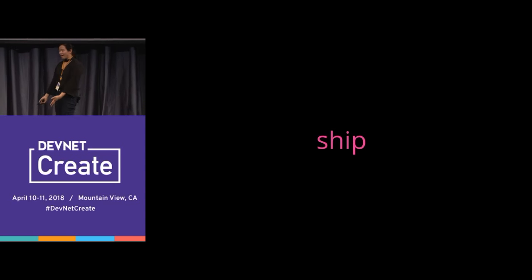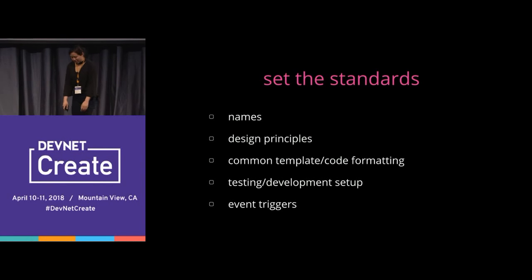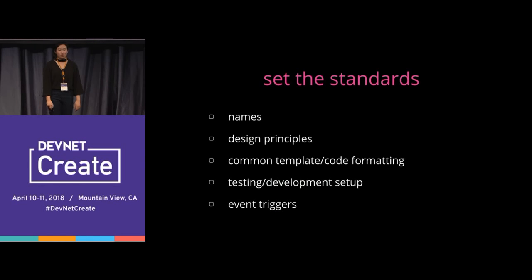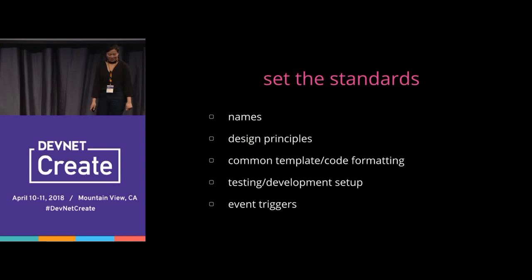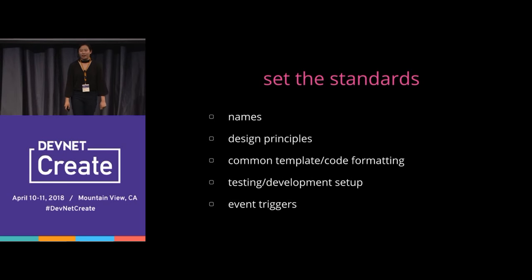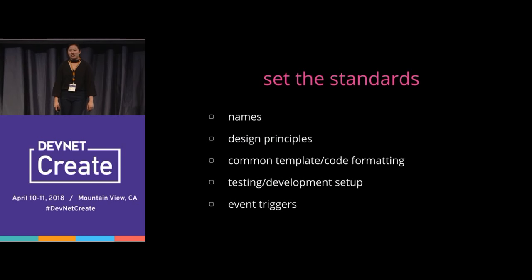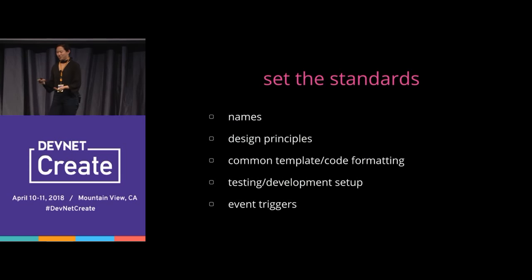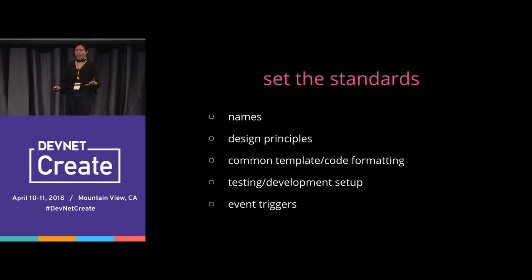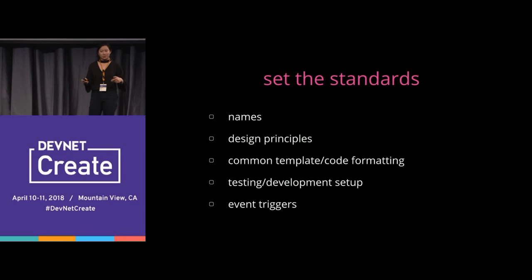Ship — what do I mean by shipping a network? How do you get it to production? First, set the standards and norm on them. Think carefully about names. Be very explicit about design principles. When I was with a client, no one knew whether an instance had to be deployed on a private or public domain, and no one knew which public domain went into prod versus staging versus dev. We had no standardization, so we couldn't automate it — and this was on public cloud.